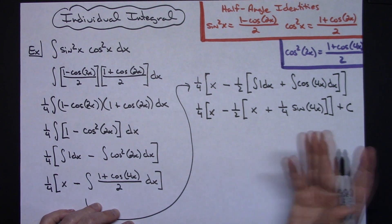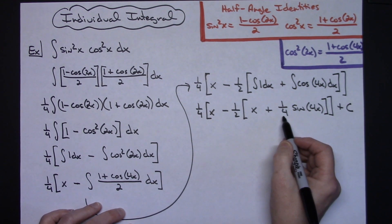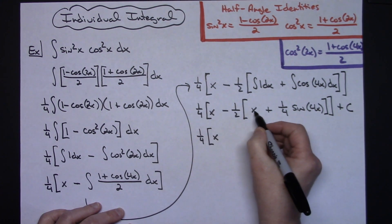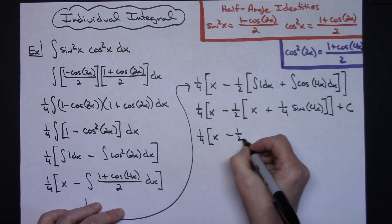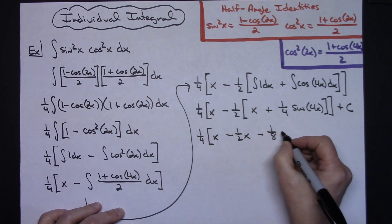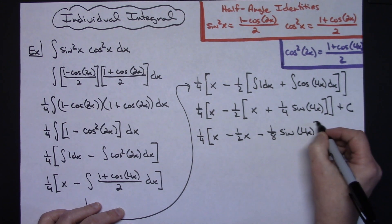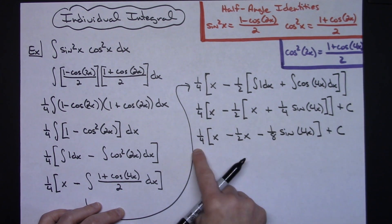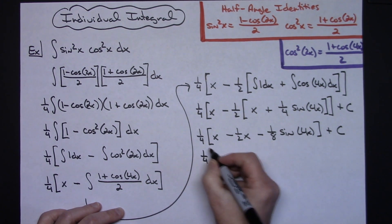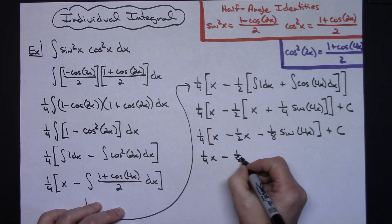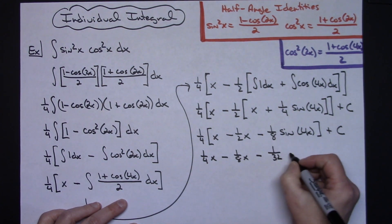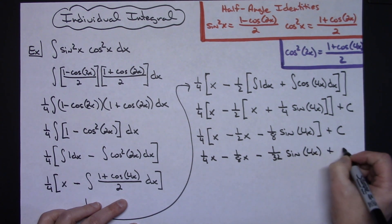From here on down it's just going to be simplifying terms, distributing. I'm going to distribute that negative 1 half. So I'll have a 1 fourth times the quantity of x. Distributing here I have a minus 1 half x. Distributing here I'll have a minus 1 eighth. 2 times 4 is 8 there. Sine of 4x and then plus c. And then distributing one more time that 1 fourth all the way around. So I'll have a 1 fourth x minus 1 fourth times a half is going to give me a 1 eighth x. 1 fourth times that 1 over 8 is going to give me a 1 over 32 sine 4x and then plus c.